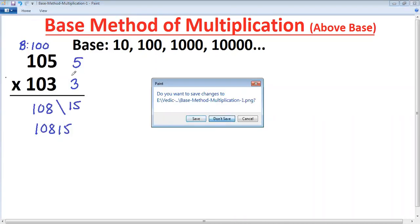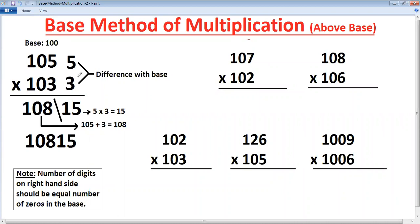I can see here the details. This is 105, 103. These are the differences with the base. Multiply these differences. That is right hand side answer. It's aligned to separate right hand side and left hand side. And left hand side is a cross addition. 105 plus 3. Final answer just join together. Let's try more examples.